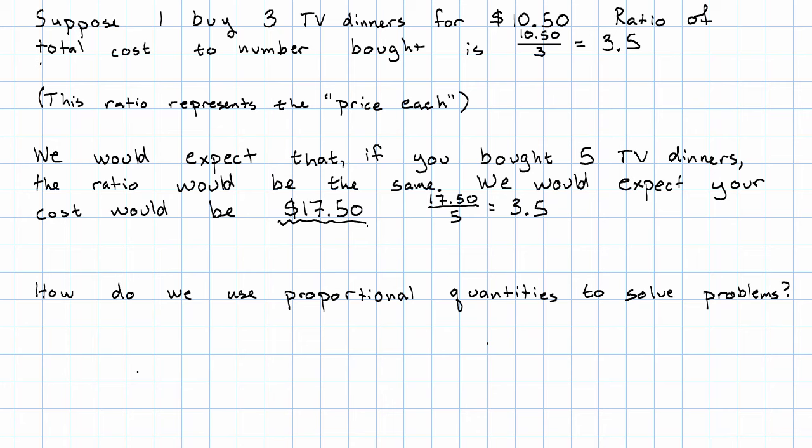The easier way to go about this is just to go back to our definition of a ratio. Remember, the ratio of A to B is the number so that A is B times the ratio. So that means that the cost is equal to the five TV dinners that you buy times the ratio, 10.50 over three.